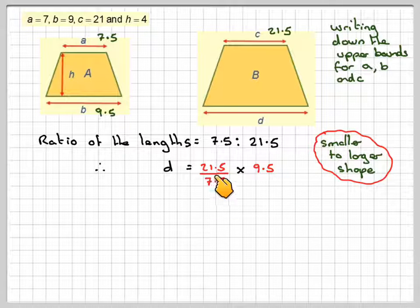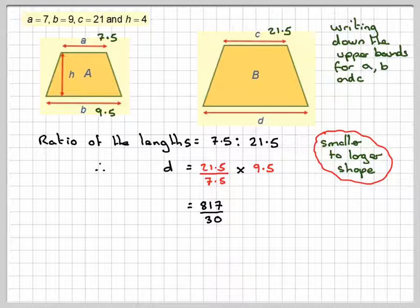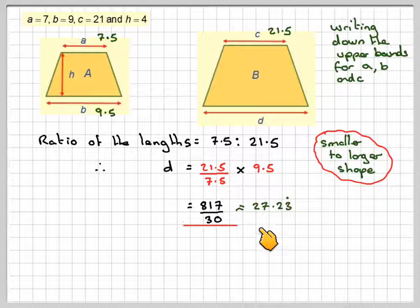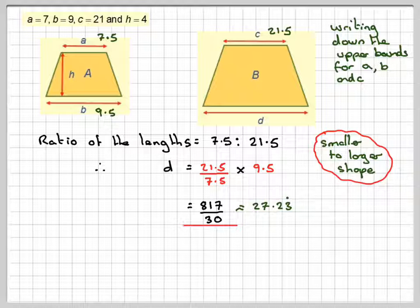Use the fraction button on your calculator, and that will give you 817 over 30, which is approximately 27.23 recurring.